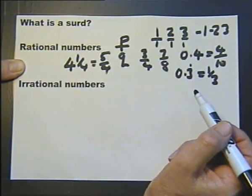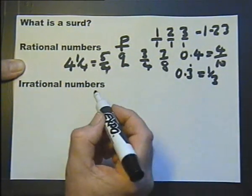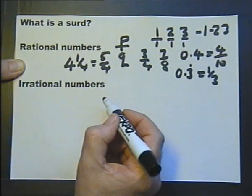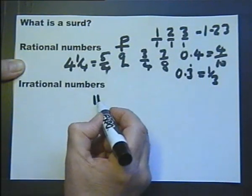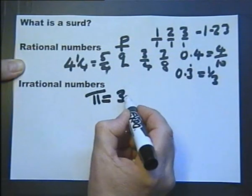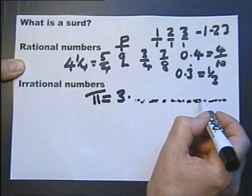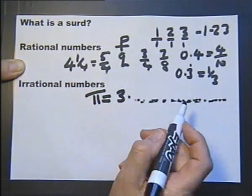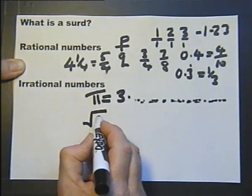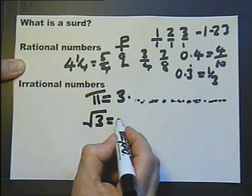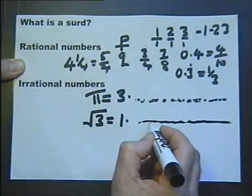An irrational number is a number that can't be plotted on a number line, such as a non-terminating, non-recurring decimal. Pi is a very good example, because if you try to express it as a decimal, you'll find that it doesn't recur and it doesn't ever stop. So that's an irrational number. Or the square root of a non-perfect square — it's a decimal that never recurs and never repeats.